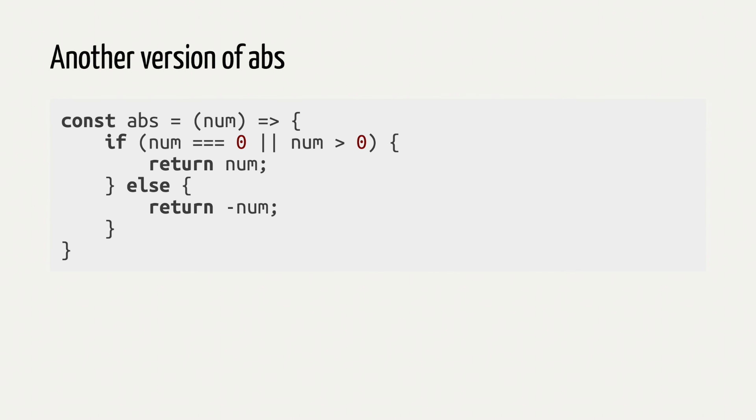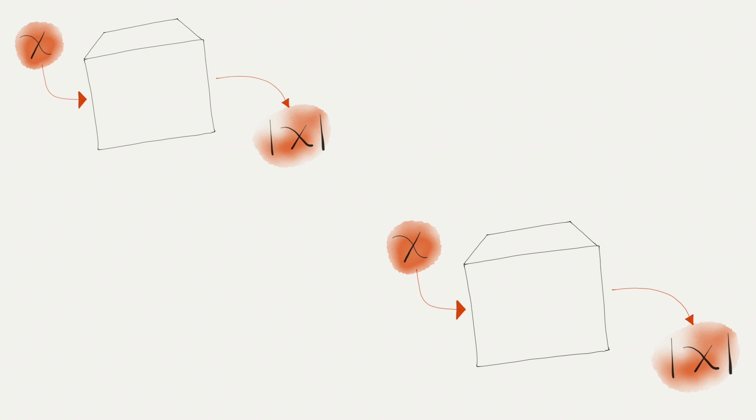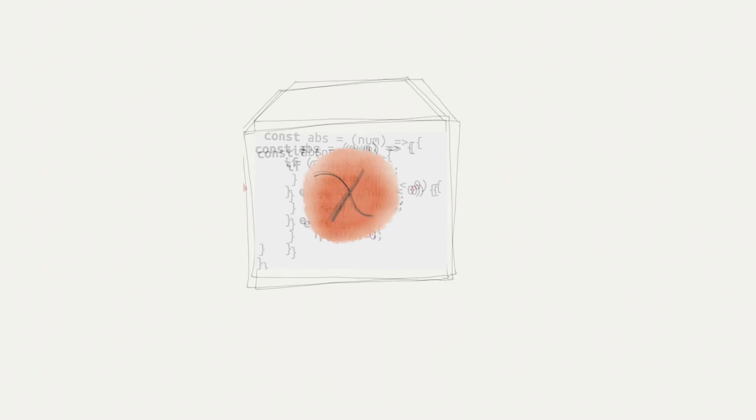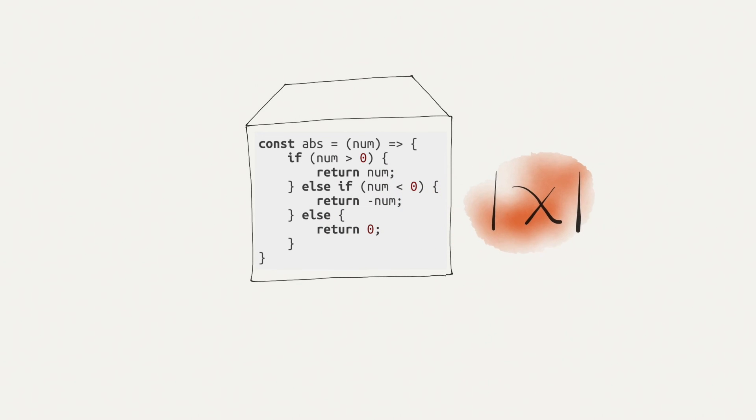You can think of yet another way of writing the same function using greater than or equal sign, for example. When I say same function, I mean that the function behaves the same way from the outside. But the insides, the implementation can be different. So this is how programs do basic logic. Check some information and do one thing or another thing, depending on the information given.